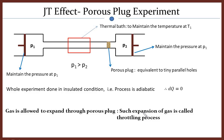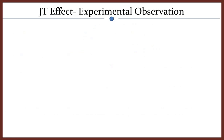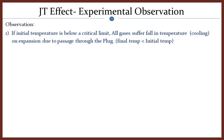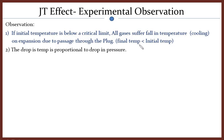Now let us see what observations we can make from this experiment. The first observation is: suppose you choose your initial temperature below a critical limit. In that scenario, you will find a cooling effect — after expansion the gas will cool down. The final temperature of the gas is less than the initial temperature. This cooling depends upon the drop in pressure: if you have a larger pressure difference between the two compartments, the drop in temperature is larger. So drop in temperature is proportional to drop in pressure.